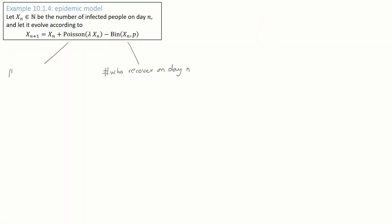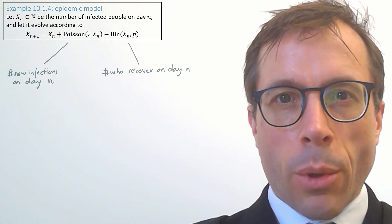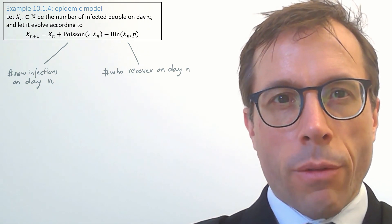Here's our model. It has two terms, one for the number of people who recover, and one for the number of new infections.